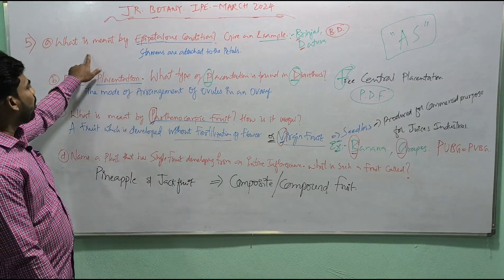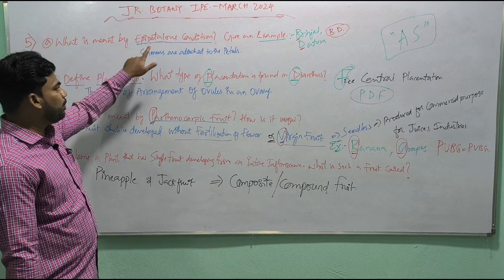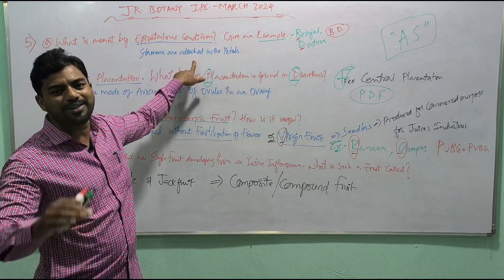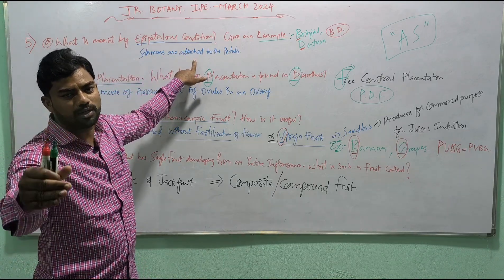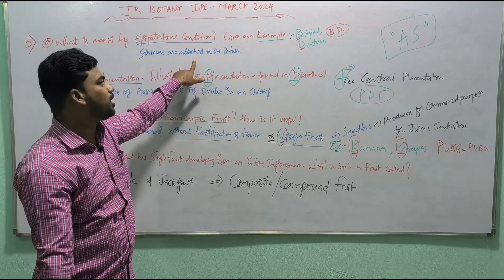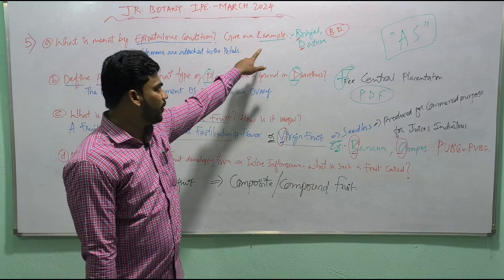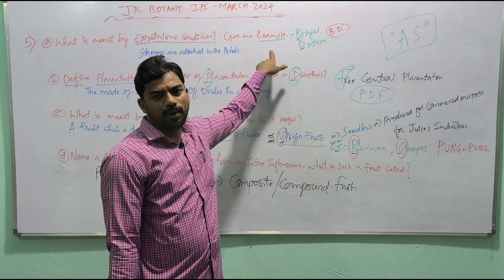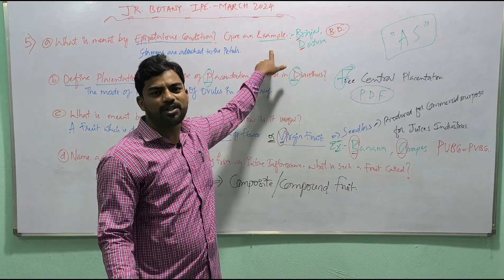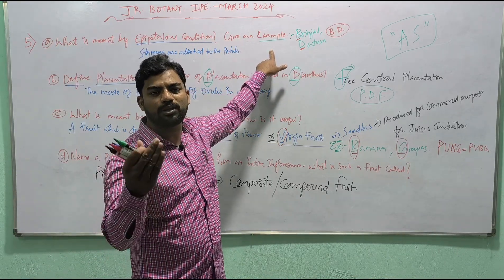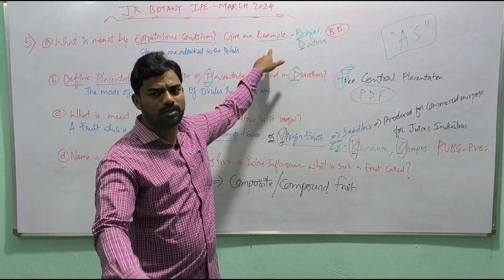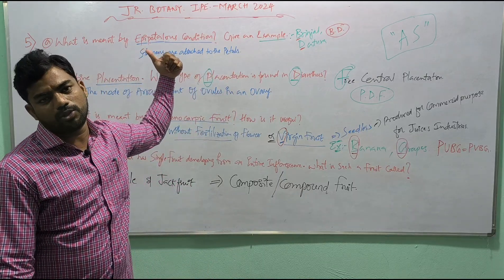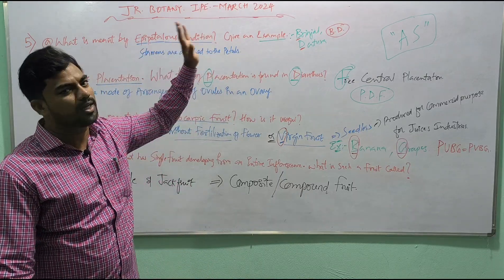Quick recap — Question 1: What is meant by epipetalous condition? Stamens are attached to the petals — that is the epipetalous condition. Example: brinjal and datura. Just as a betel leaf sticks on top of something, similarly stamens stick onto the petals.